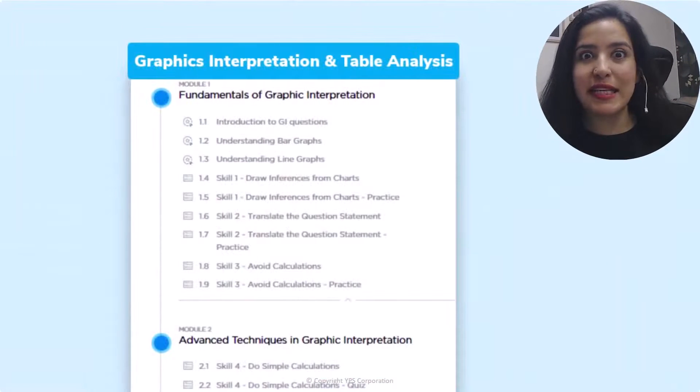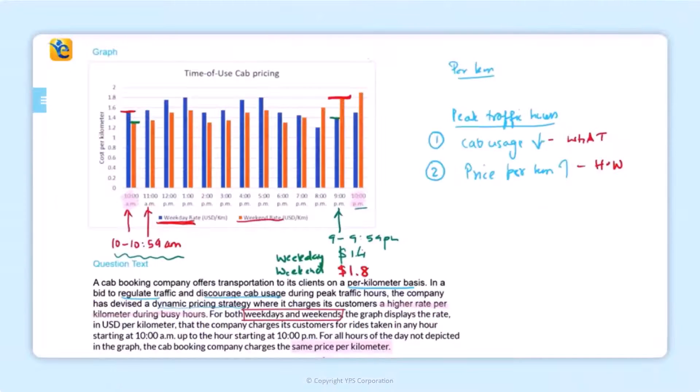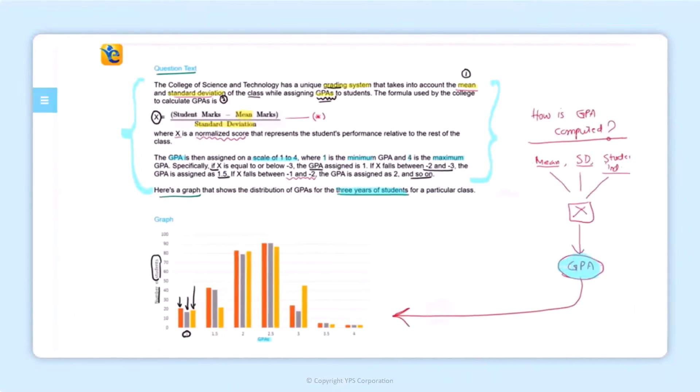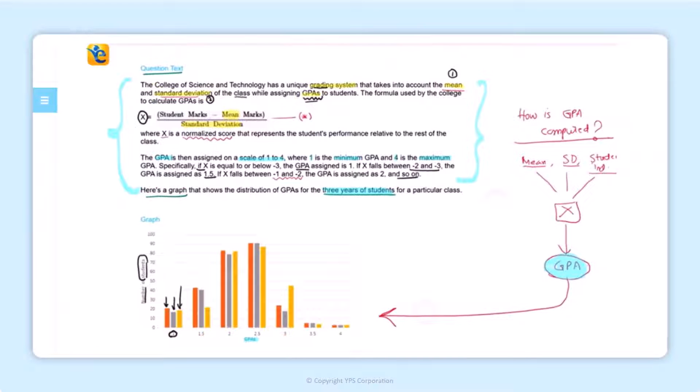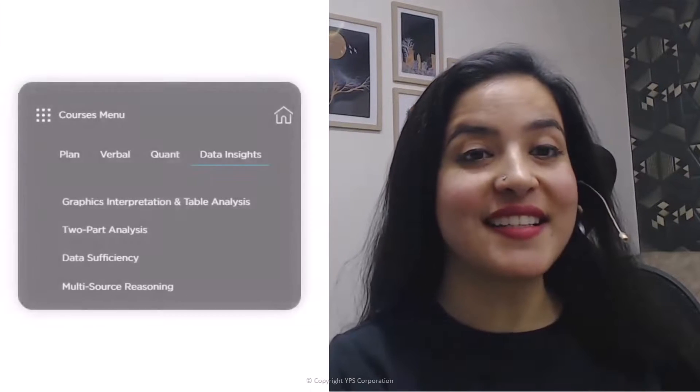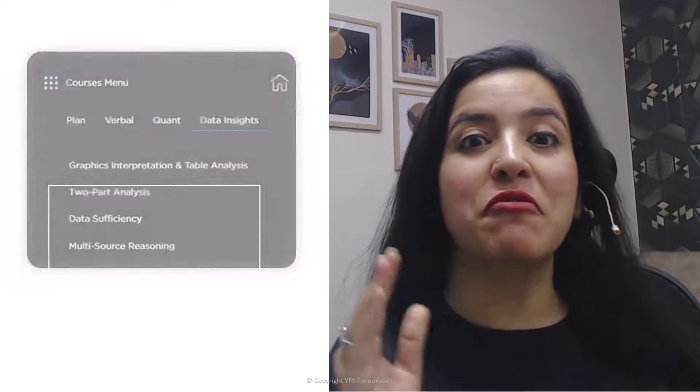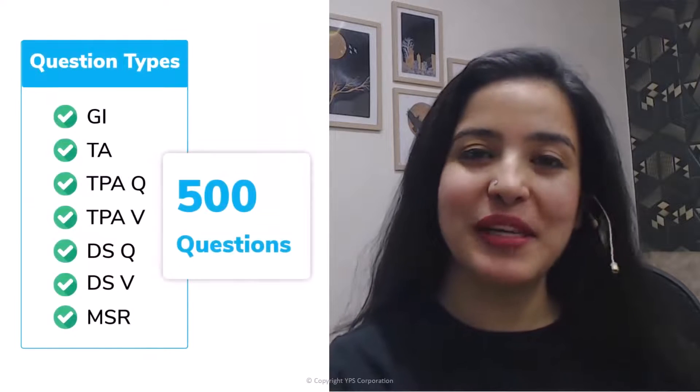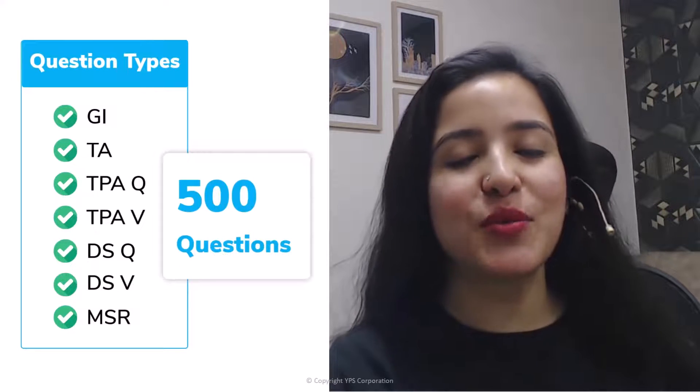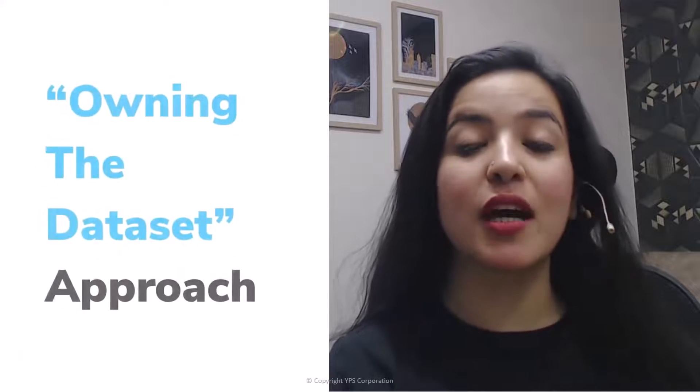In fact, the way we applied translate-process skills so comfortably in this question - in the e-GMAT course, you will learn how to build this translate-process skill through purpose-built exercises. Thus, throughout the DI course, through around 500 questions, you will learn such process skills so that you can also comfortably use the owning the data set approach.